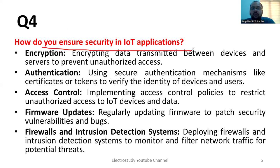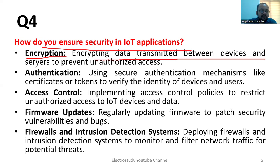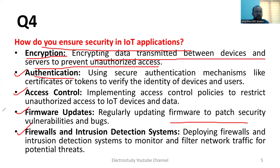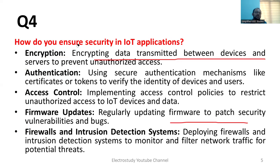How do you ensure security in IoT applications? There are several parameters. First is encryption — encrypting the data transmitted between devices and the server to prevent unauthorized access. Second is authorization — only information available to the right person. Third is access control, where there are restrictions and not everyone can access the system. Fourth is firmware updates — regularly updating the firmware to patch security vulnerabilities and bugs. Fifth is firewalls and intrusion detection systems — deploying firewalls mainly for protection as a security system. These are the major security measures available in IoT applications.